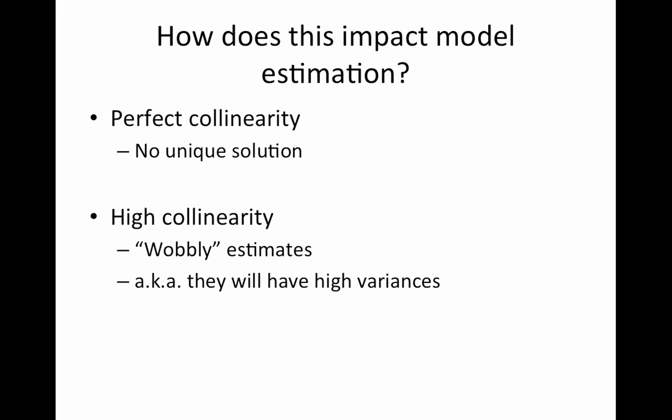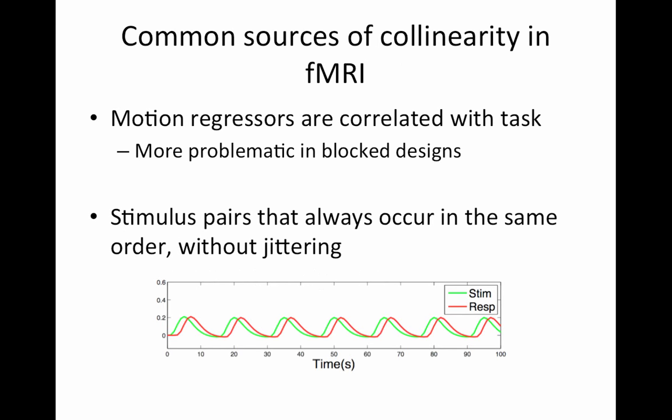Oftentimes motion regressors can be correlated with task. This is more problematic for block designs. Think about why. Let's say I shock somebody, they get a shock for half a second and then it goes away. Why don't I have to worry so much about if they move their head during the shock and how that's going to correlate with the activation that corresponds to that shock? This is one of the cases where the hemodynamic delay is in your favor.